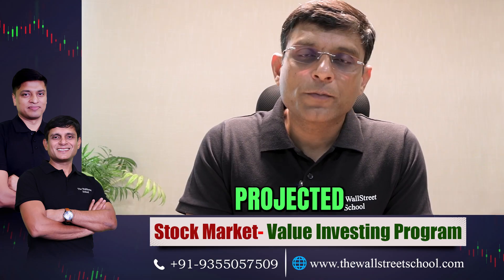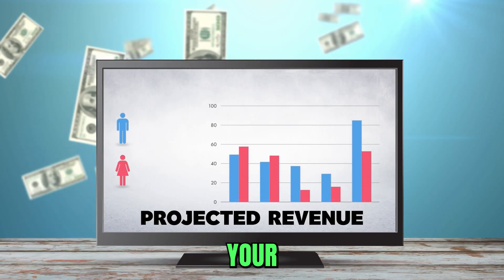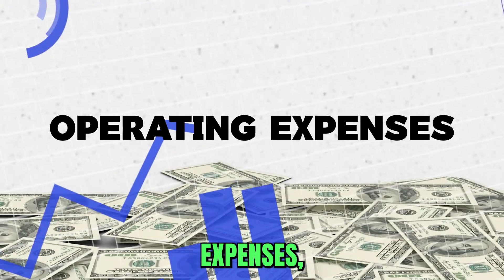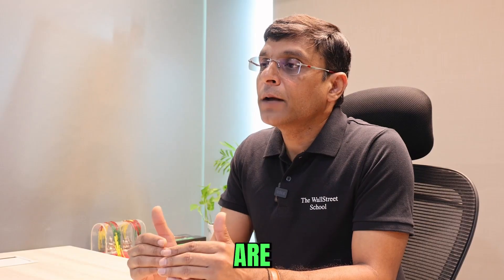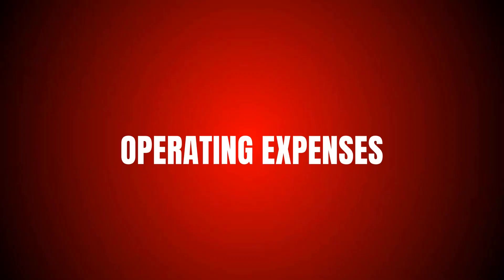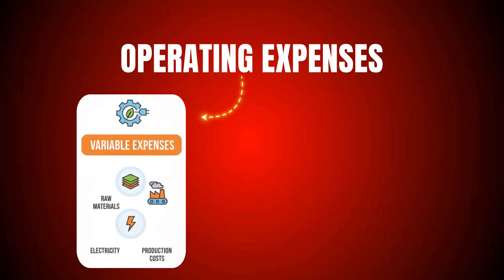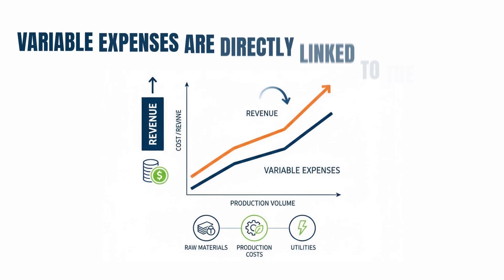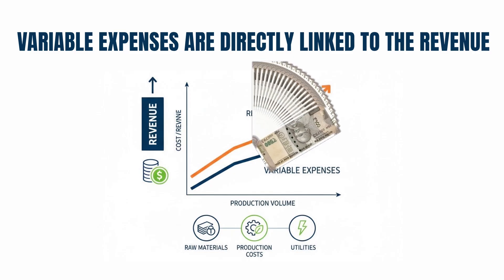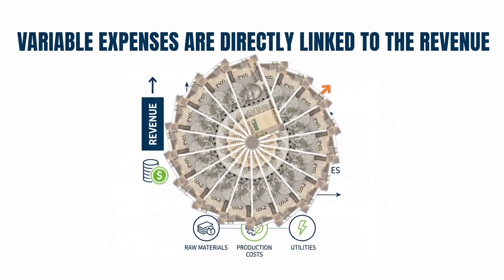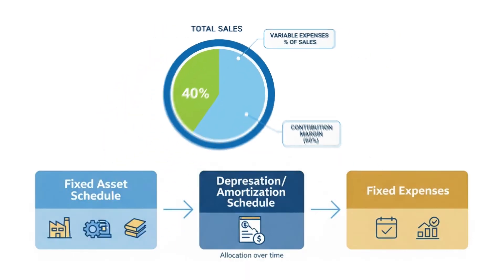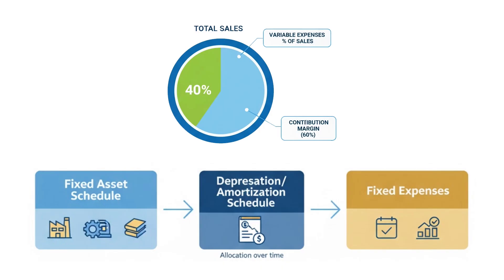Once you have projected revenue or completed the capex schedule, the next step is calculation of operating expenses, which are directly related to your sales. We can divide expenses into two parts: variable expenses, which are linked to revenue as a percentage of sales, and fixed expenses. For fixed expenses, you can create a depreciation and amortization schedule linked directly from the fixed asset schedule.